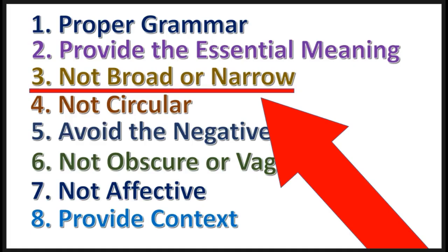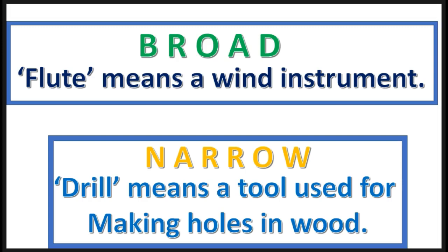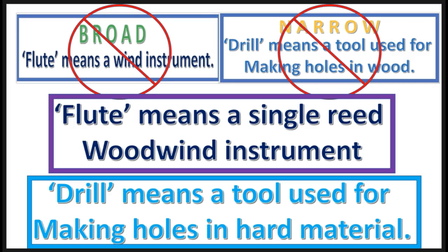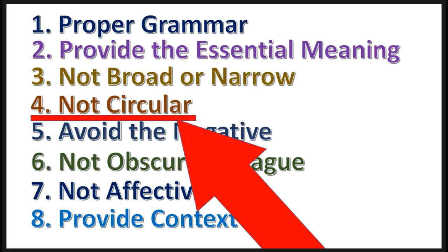Rule number three: a lexical definition should not be too broad or too narrow. Here's an example of a broad definition and a narrow definition. Now they should be this way — these definitions are better.